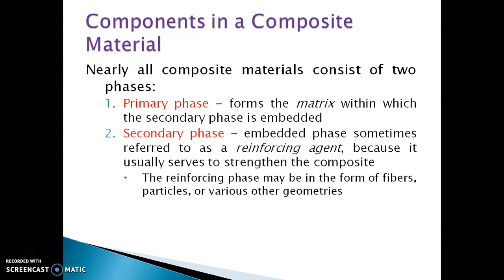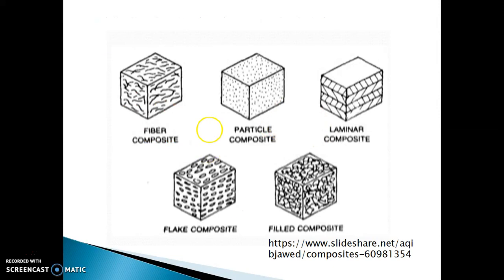What are the components in a composite material? A composite material has two phases. The first one is the primary phase and the second one is the secondary phase. In the primary phase, the composite material forms as a matrix within which the secondary phase is embedded. The secondary phase is sometimes referred to as the reinforcing agent because it usually serves to strengthen the composite. The reinforcing phase may be in the form of fibers, particles, or other forms. These are examples of fiber-reinforced composites.